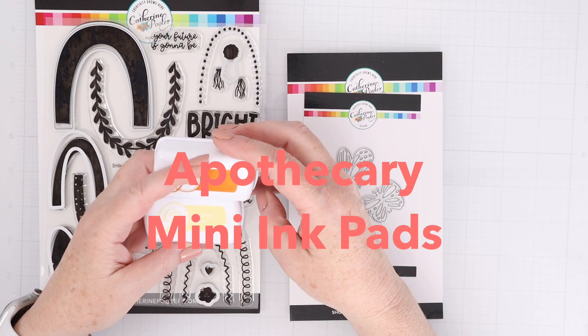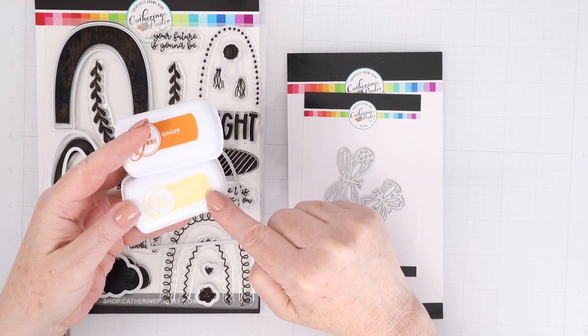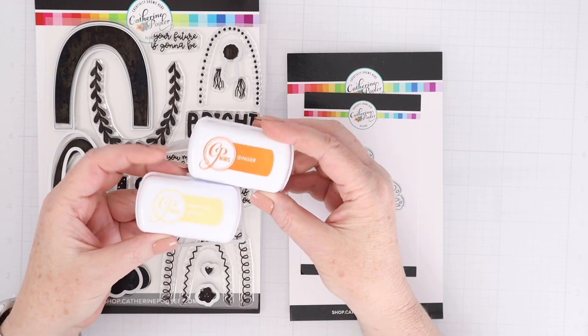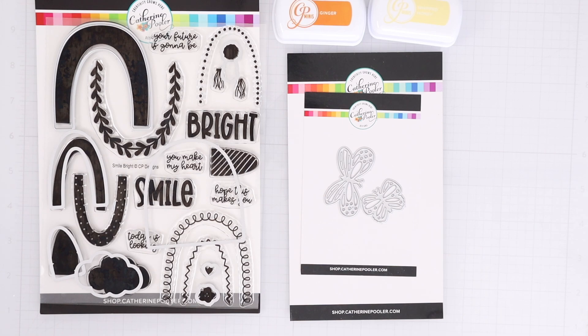And they are coming out with the Apothecary mini ink pads. So the Apothecary set has some gorgeous orange, yellow, greens, and purples perfect for spring, and now you can get that set in the minis.